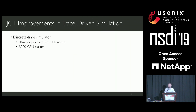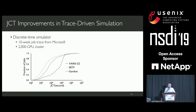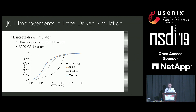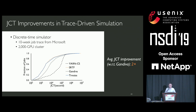We ran simulations using a 10-week job trace from Microsoft over a 2,000-GPU cluster. In addition to YARN Capacity Scheduler and SRTF, we also compared with Gandiva, the most recent scheduling framework for deep learning clusters. When running with our system, almost every job has a shorter completion time compared to Gandiva, and the average JCT is improved by more than two times. More evaluation results can be found in our paper.